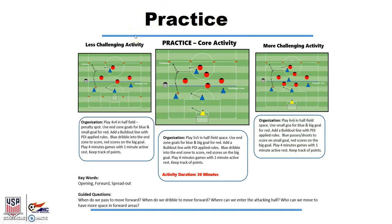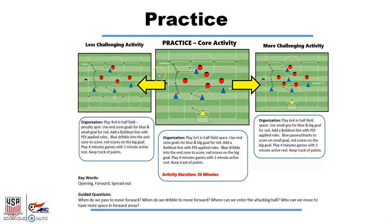The practice portion, or the second portion of our training, is comprised of a core activity. Featured within the core activity is a less challenging activity and a more challenging activity. The main deviations from the core activity are either a reduction or increase in the size, space, and number of players, as well as the ways in which they score. The core activity, ranging for 30 minutes, should be used to challenge players in a small-sided games approach. Coaches will reflect using the five elements to determine whether to use the less or more challenging activity.